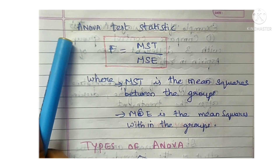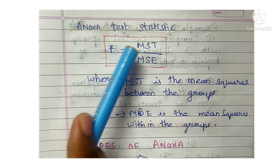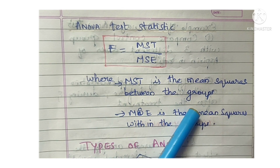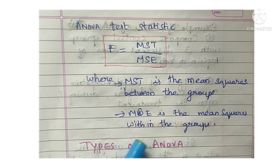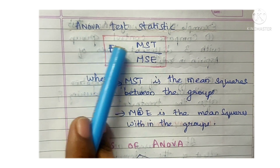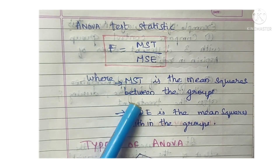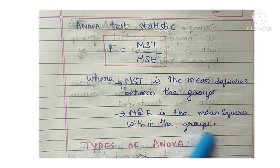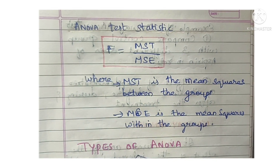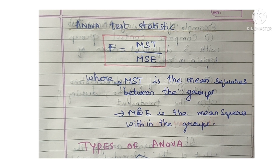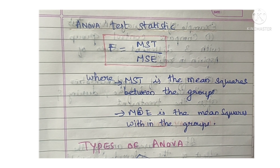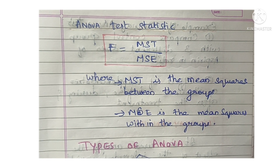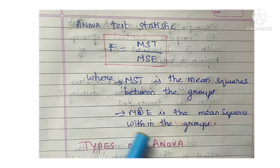The formula for the ANOVA test statistic is: F = MST divided by MSE. MST is the mean square between the groups, and MSE is the mean square within the groups.